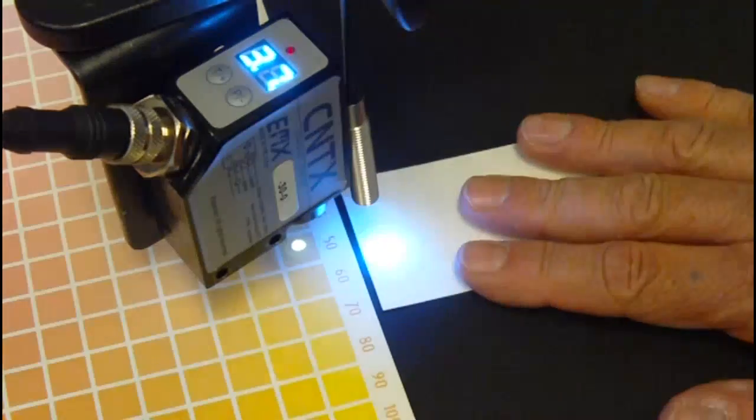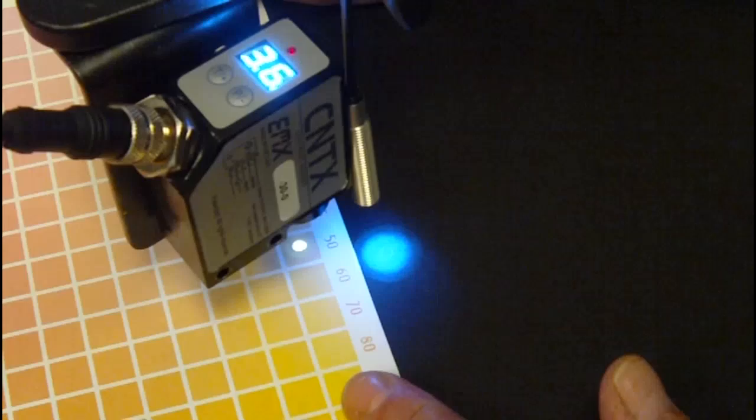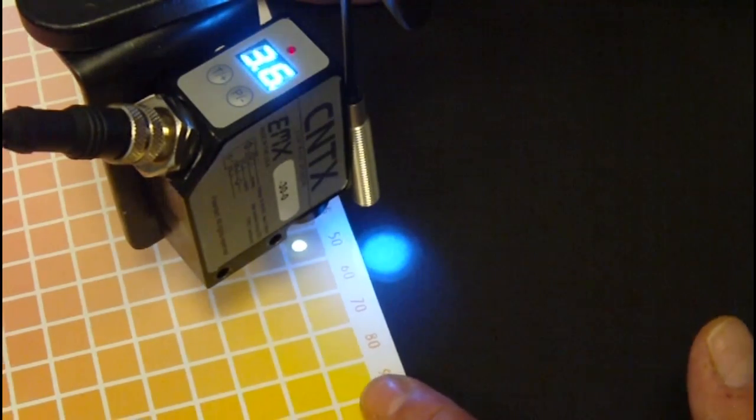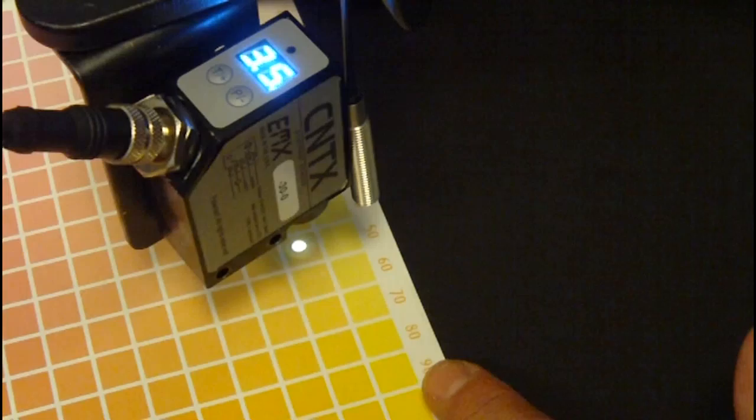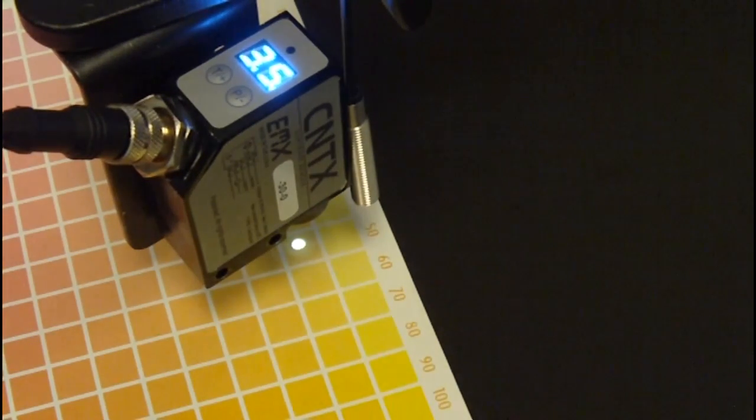And we can see the discrete output is on. And the signal is reading at 37. Now, when I move into the slightly darker shade with a 5% mix of red, you can see that the discrete output turns off because the signal drops below the threshold.